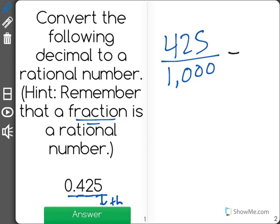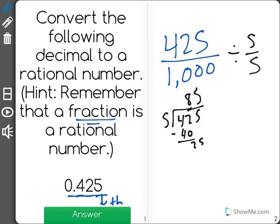I'm going to start by dividing both sides by 5 since I know that they're both divisible by 5. 425 divided by 5 will give me a total of 85, and 1,000 divided by 5 is 200.